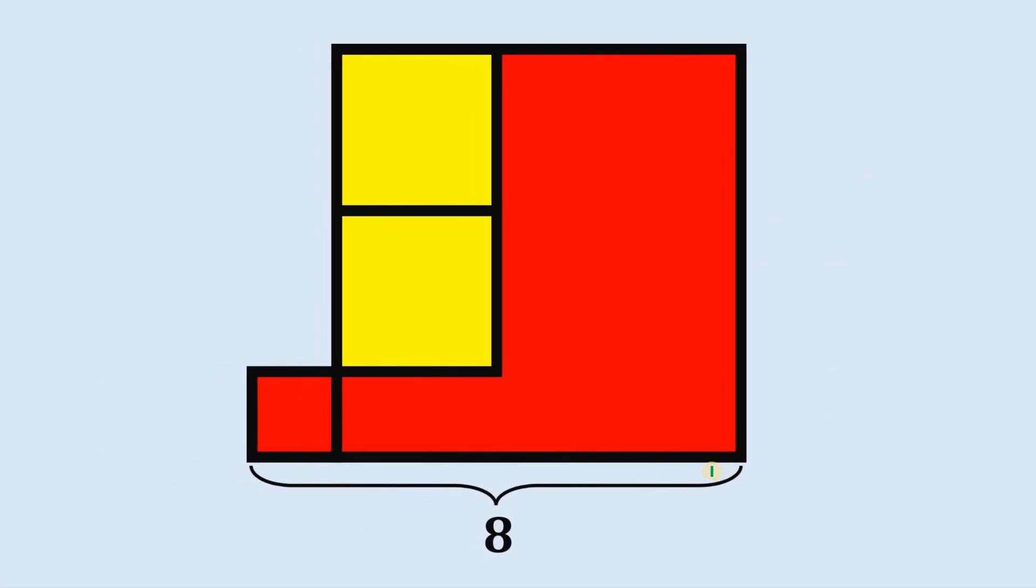Alright, so given this figure, the goal is to find the area of this red region. Now since we don't know this length, let's call this as x, so this x is the side length of this small red square.